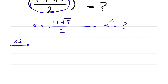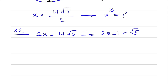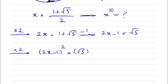We're going to multiply this equation by 2 in order to get rid of the denominator, so 2x = 1 + √5. Then we subtract 1 from each side, giving us 2x − 1 = √5. To eliminate the square root on the right side, we square both sides, so (2x − 1)² = (√5)² = 5.